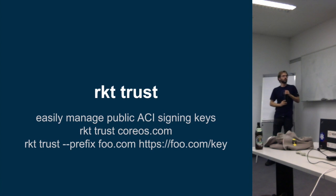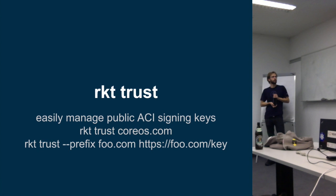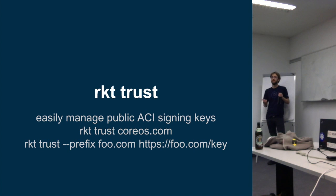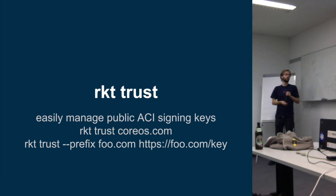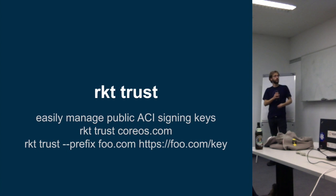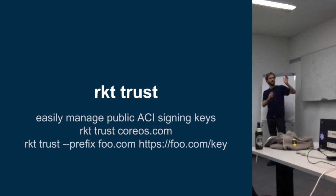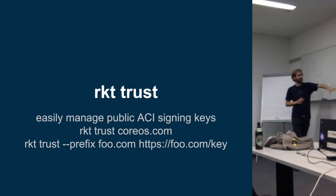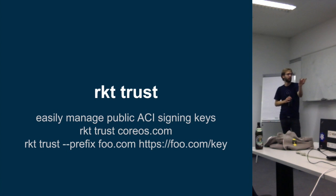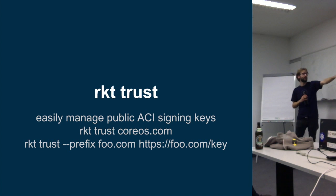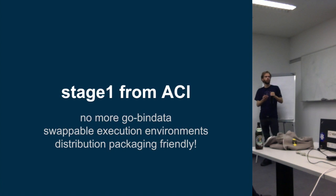Rocket Trust is a command to manage signing keys. Security and image signing are very important to us — we want that to be the default behavior. Using Rocket Trust, you can trust a specific key for a given DNS namespace prefix. For example, we can trust the key located at a specific URL and trust it for images that have a certain name prefix. I'll show you how that actually works in a second.